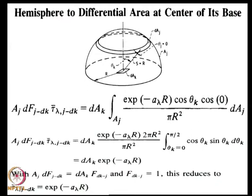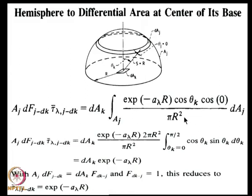From the concept we discussed in the last lecture, A_j F_{A_j to A_k} is the radiation from all the gas elements to the base. You can do the integration over the whole of A_j. The expression is such that cos θ_j equals 1, because the rays leaving surface j are always normal to the surface. Because it is a spherical system, the integration is always very simple in these calculations.